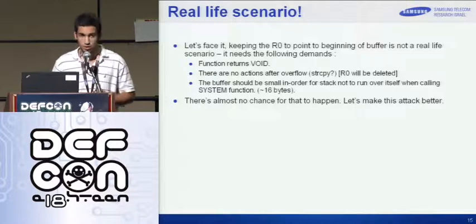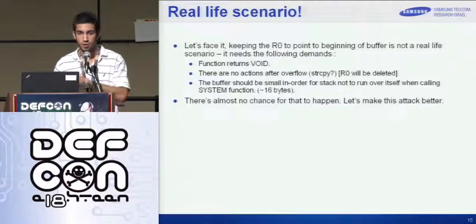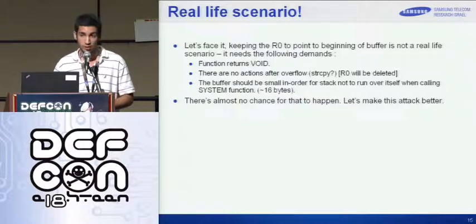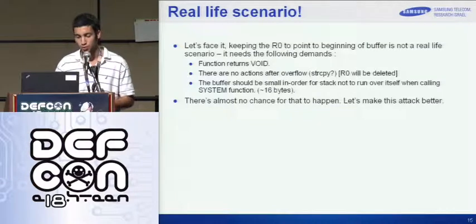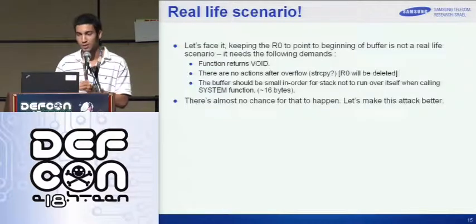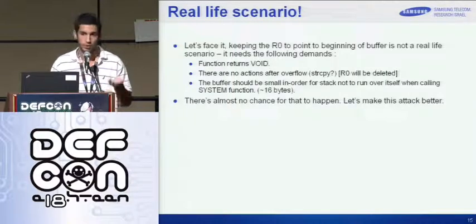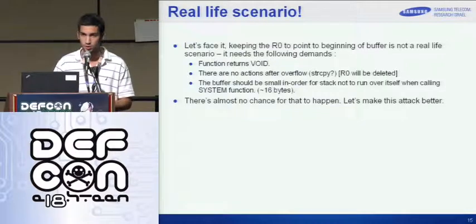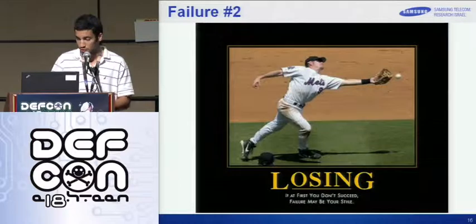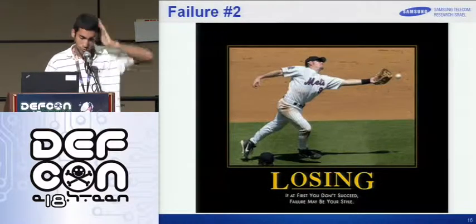But that's a lie, because that's a very hacker-friendly program I made especially for the demo — it's not a real-life scenario. In order to have that scenario, we need a function that returns void so that after the overflow nothing happens and R0 will not be deleted. The buffer should be small — like 16 bytes — so that the system function doesn't use the same stack pointer space. There is almost no chance in the world for that to happen. If it happened to you, you're very lucky.